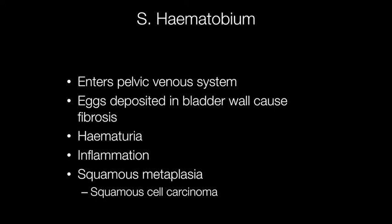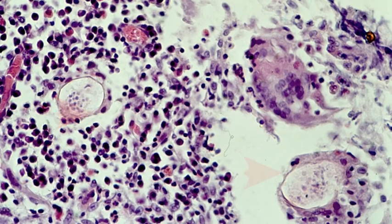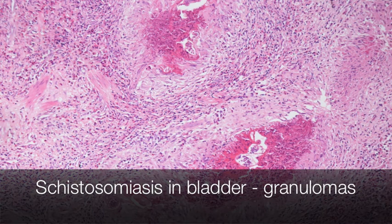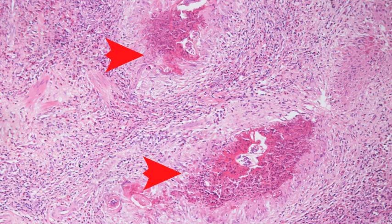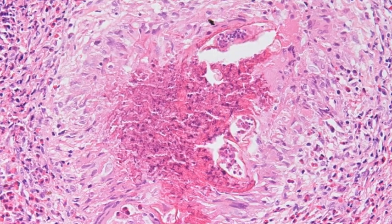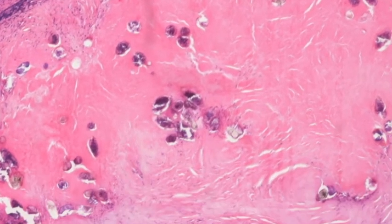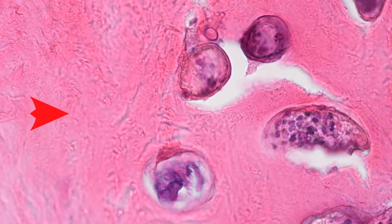Incidentally, Schistosoma haematobium was first identified by Theodore Bilharz in Egypt in 1851, and this is why the term Bilharzia is an alternative name for the condition of Schistosomiasis. This is an example of Schistosomiasis in the bladder — a bladder biopsy showing two well-formed granulomas with Schistosome eggs in the middle of them. This higher power view shows calcified eggs with surrounding dense fibrosis.